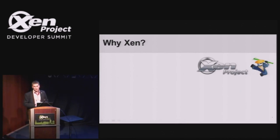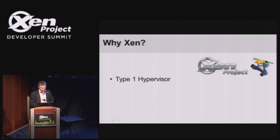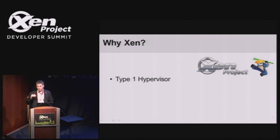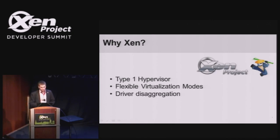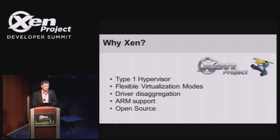So why Xen actually? There are a lot of hypervisors out there. We were thinking about KVM, Green Hills Integrity, and so on. Xen is a type-1 hypervisor. We decided it's very important to keep the hypervisor level as thin as possible, and Xen is a way to do this. It has flexible virtualization modes — we use only HVM, but there's also PVHVM which is very useful. It allows driver disaggregation, has ARM support, and it's open source, which means we were able to start working with it from zero without waiting for years of legal processes.